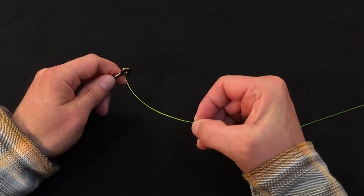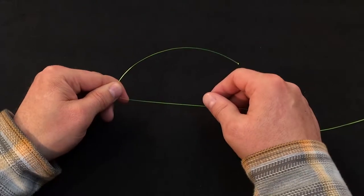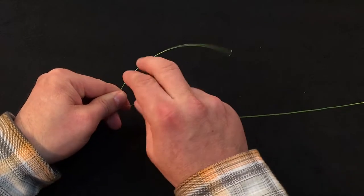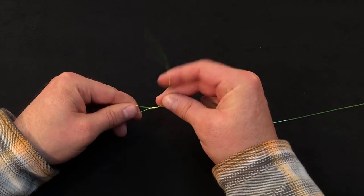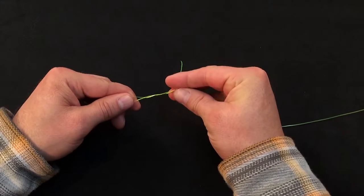To tie this knot, we'll simply pass the tag in through the eye of the hook, leave about six or seven inches, take the tag in and wrap away from us, and we'll do three turns with this because of the diameter of the tippet material we're using.